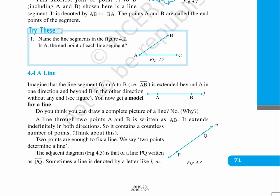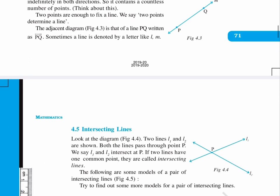Two points are enough to fix a line. We say two points determine a line. The adjacent diagram, figure 4.3, is that of a line PQ written as PQ with an overhead extended arrow bar. Sometimes a line is denoted by a letter like L, M.